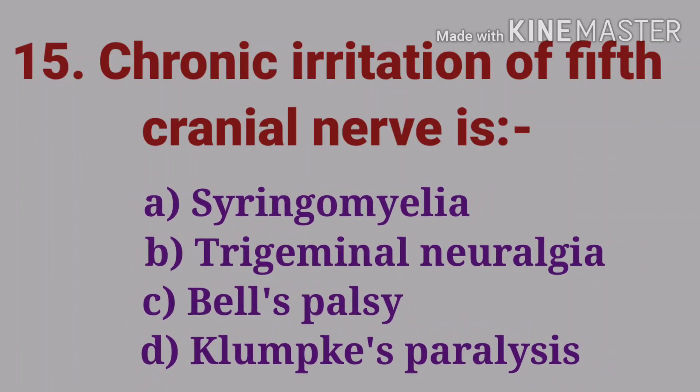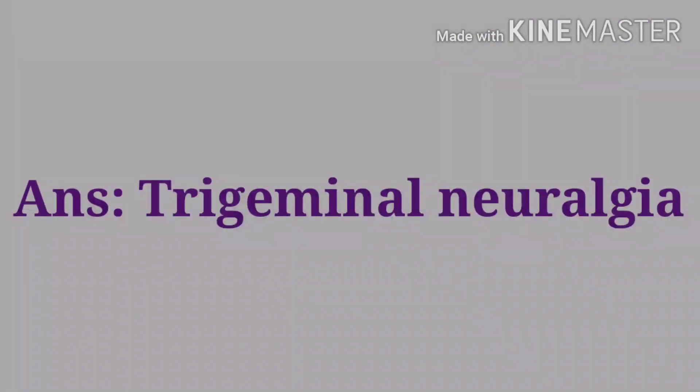The fifteenth question: chronic irritation of the fifth cranial nerve is — options are syringomyelia, trigeminal neuralgia, Bell's palsy, and Klumpke's palsy. The answer is trigeminal neuralgia. The fifth cranial nerve is the trigeminal nerve, so irritation of the fifth cranial nerve results in trigeminal neuralgia.